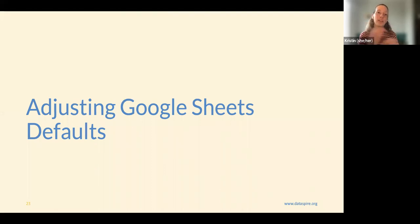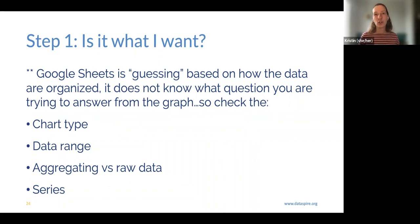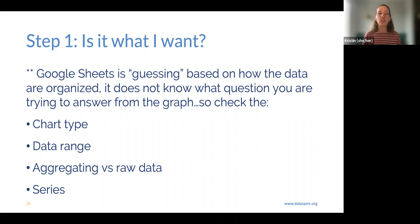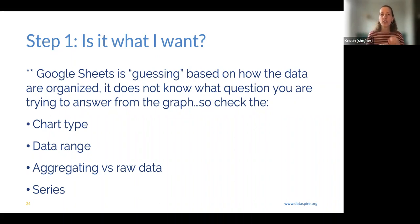Step one for adjusting Google Sheets defaults: Google Sheets is guessing based on how the data are organized, not what you're trying to ask from the data. So you need to make the choice about chart type. You may need to adjust the data range depending on how you highlighted the data. Think about whether you want the aggregate or all the data, which series you want, and what the colors should be — all based on what you're actually asking from the data.